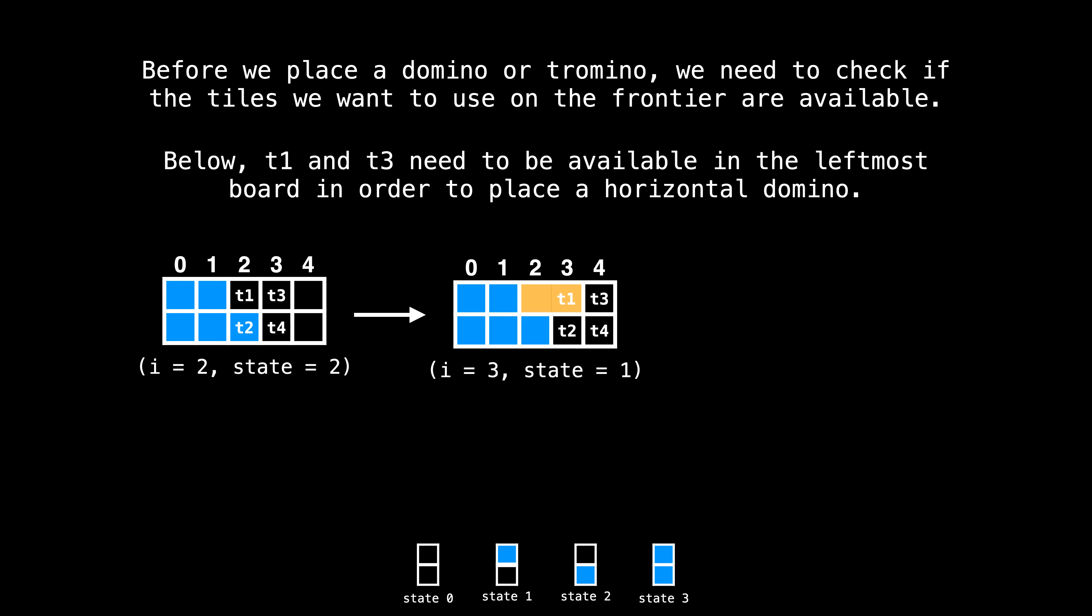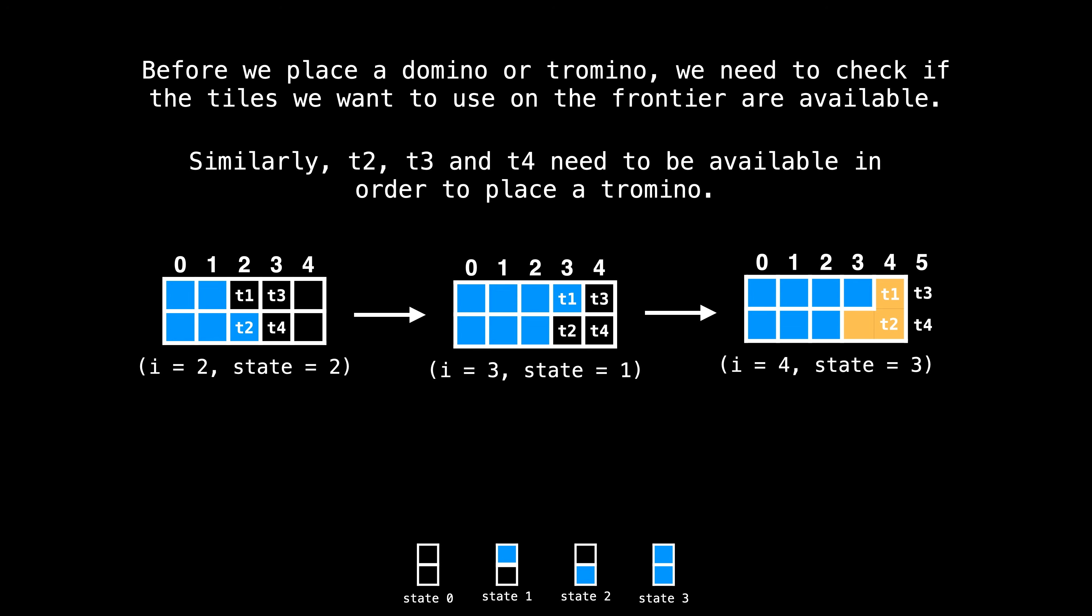Before we place a domino or tromino, we need to check if the tiles we want to use on the frontier are available. Below, since t1 and t3 are available in the leftmost board, we are able to place a horizontal domino to generate the middle board. Similarly, we can build off the last partial state by adding a tromino since t2, t3, and t4 are all free. One thing to notice here is that as we place blocks and fill the board, the frontier moves as blocks are placed.